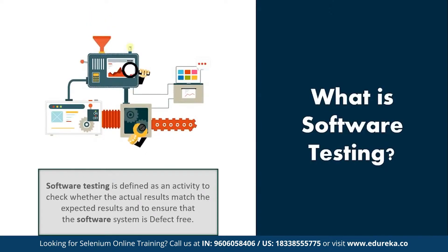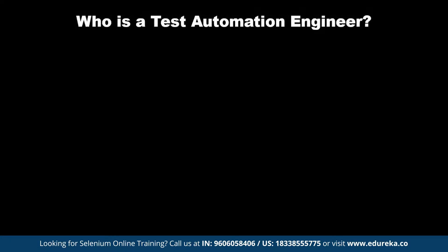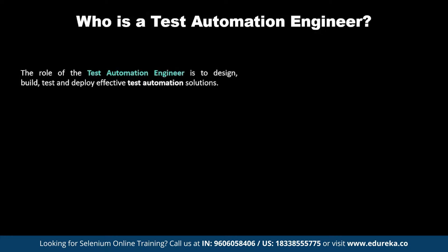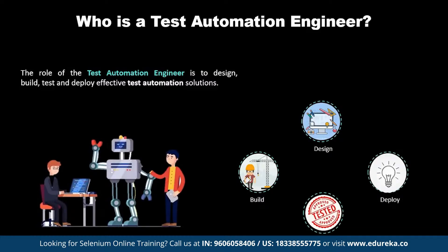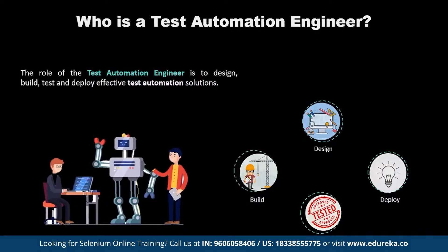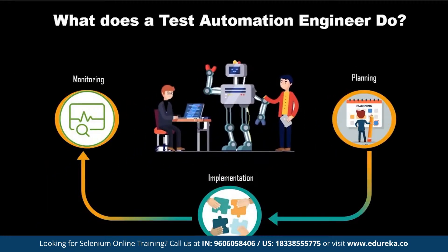Now that you know what software testing is, let's see who is a testing automation engineer. The role of the test automation engineer is to design, build, test, and deploy effective test automation solutions. To fulfill this role, the automation engineer applies appropriate automation technologies to meet the short and long-term goals of the testing organization. An automation engineer basically utilizes technology to improve, streamline, and automate a manufacturing process, and is responsible for planning, implementation, and monitoring of such technology.